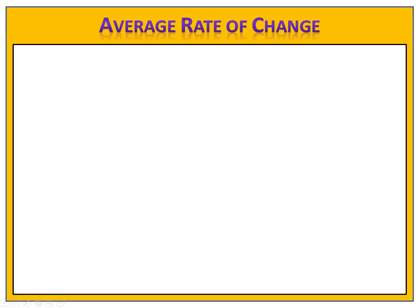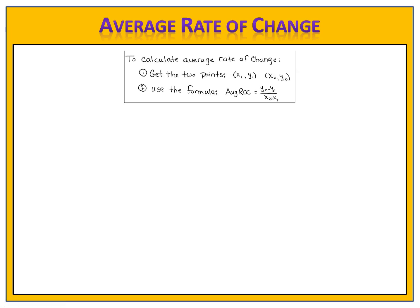So how does this work? We know that to calculate average rate of change we need first to get two points. Then we use the formula y2 minus y1 divided by x2 minus x1.